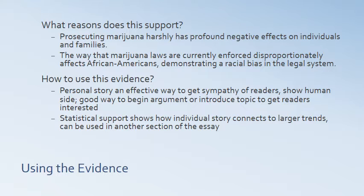How could we use this evidence? What kinds of reasons could this data help us articulate? Well, it shows us evidence that prosecuting marijuana harshly has profound negative effects on individuals and families — that's what the whole story is an example of. It also supports the idea that marijuana laws are disproportionately negative towards a certain segment of society, African Americans, and so demonstrates a racial bias in the legal system. Neither of these reasons on their own proves your overall claim, but when taken together with a number of other reasons, they can argue that marijuana should be legal.